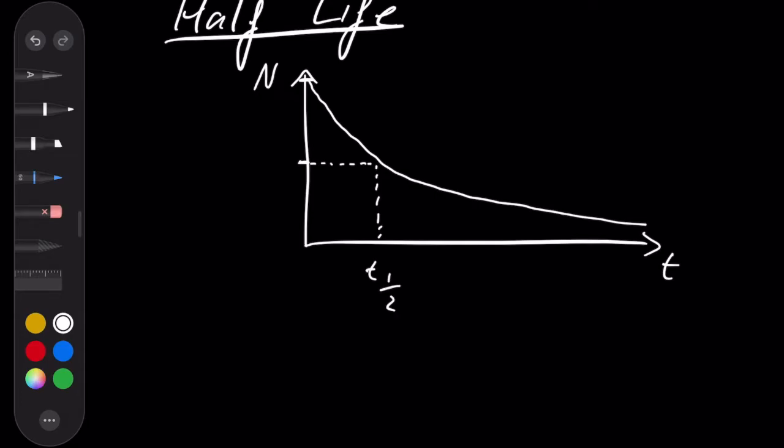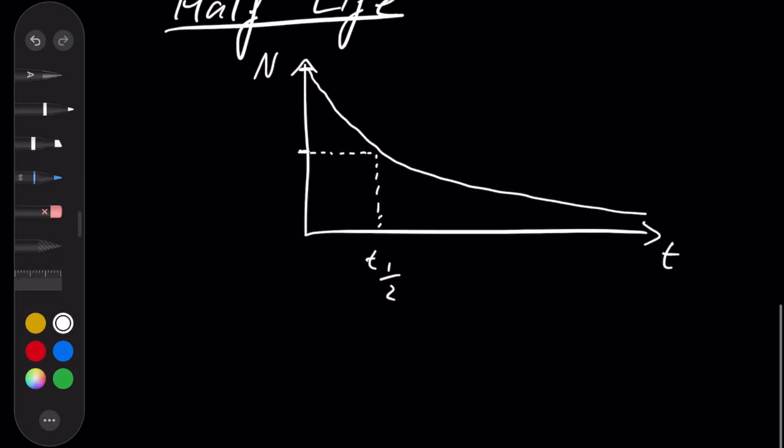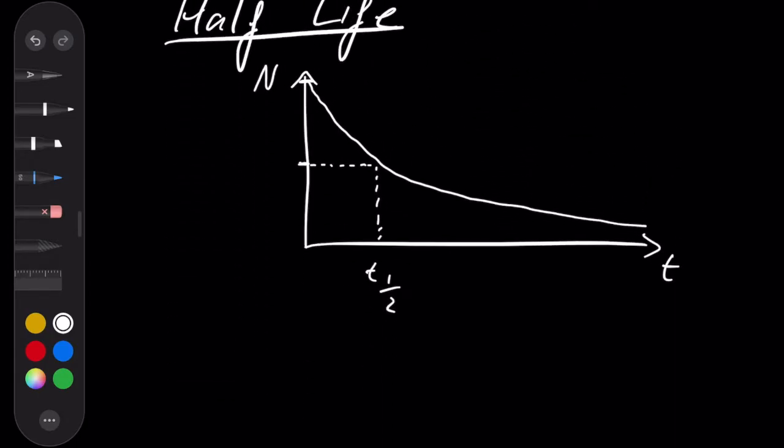And what's interesting is if I then take that value and I halve it again and I plot across, I should roughly get another half-life.